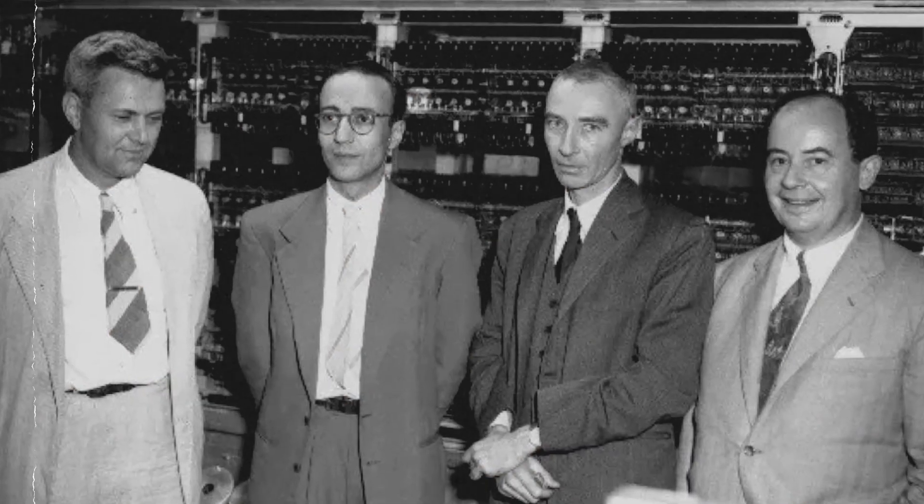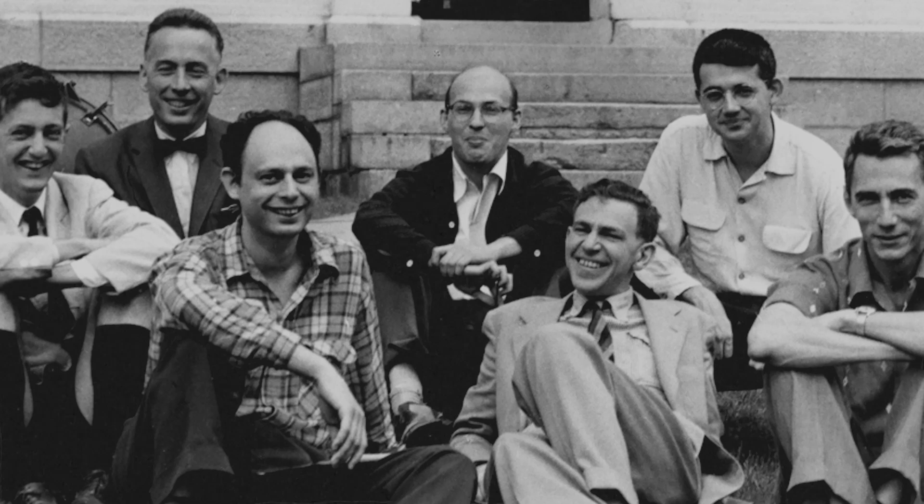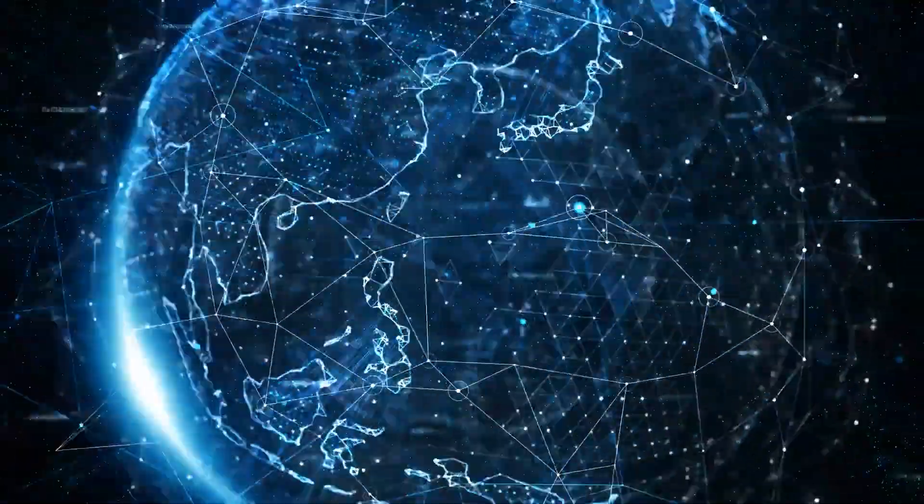The story begins in 1956, when a group of brilliant minds gathered at Dartmouth College. They had a simple yet ambitious goal: to make machines think. While they didn't succeed that summer, they planted the seeds of a revolution that would change our world forever.